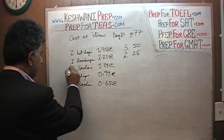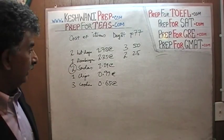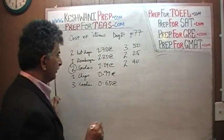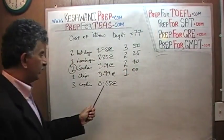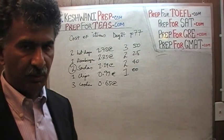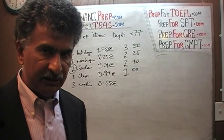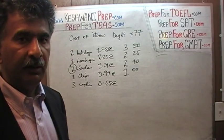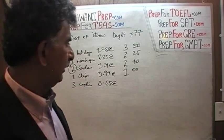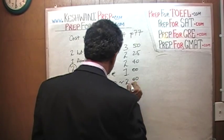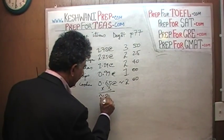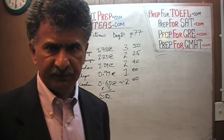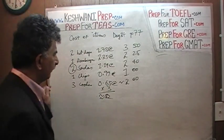Two sodas — make sure you pay attention. Two sodas at $1.19 each; we are going to pretend it's $1.20. $1.20 times 2 is $2.40. One bag of chips for about $1.00. Three cookies at $0.65 each: 60 cents times 3 is $1.80, plus three nickels is $0.15, so $1.80 plus $0.15 is $1.95 — around $2.00. That's it; we don't have to waste time doing the precise exact calculation.